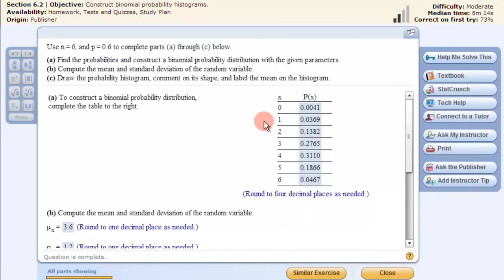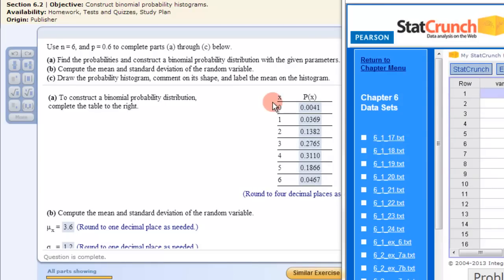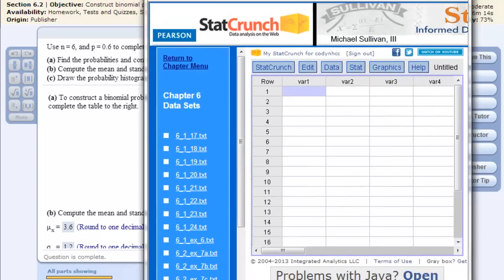If we continue on to a problem like this, here's where it wants us to construct a binomial probability distribution. So in order to do that, we can open up StatCrunch again. And we can find these individual probabilities. So we just got to keep redoing it.